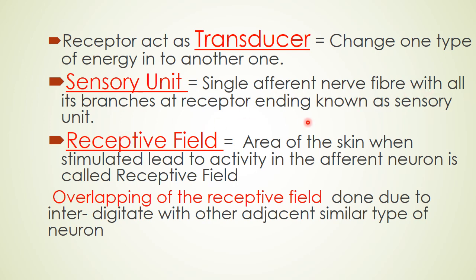A single afferent fiber with all its branches at the receptor endings is known as the celsi unit. The dendrites — specifically the branching of the dendrite of a single afferent neuron — constitute the sensory unit. The receptive field is the area where stimulation leads to activity in the afferent neuron, and these receptive fields can overlap.